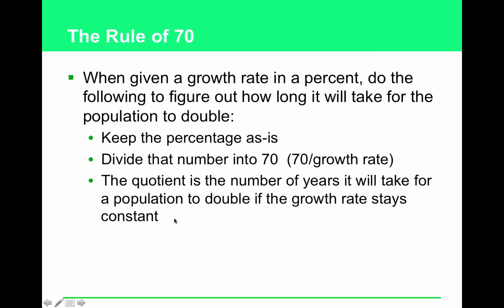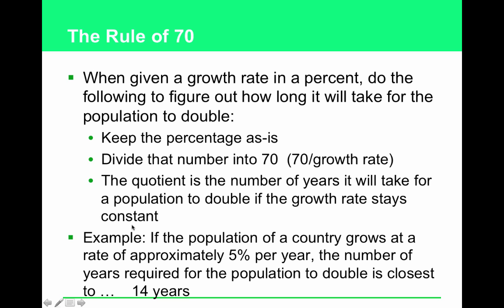The rule of 70. Explain how the rule of 70 helps to estimate the doubling time of a population. You will not be responsible for calculations on this particular quiz — this is math we'll work on in class — but you will need to know how to do rule-of-70 math for the next test. When given a growth rate as a percent, divide that number into 70. The quotient is the number of years it will take for a population to double if the growth rate stays constant. For example, if a population grows at 5% per year, the doubling time is closest to 14 years. This really drives home the power of exponential growth.